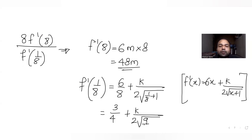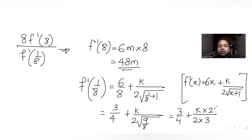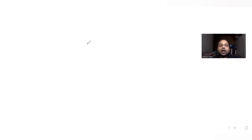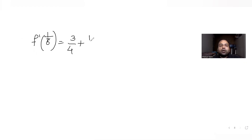Simplifying: 6 times 1/8 equals 3/4, and 1/8 plus 1 equals 9/8, so root of 9/8 equals 3 upon 2 root 2. Therefore f dash of 1/8 equals 3/4 plus k upon (2 times 3 upon 2 root 2), which simplifies to 3/4 plus k root 2 upon 3. Substituting k equal to 7 upon 4 root 2, this becomes 3/4 plus 7/(4 root 2 times root 2 upon 3), giving f dash of 1/8 equal to 4/3.